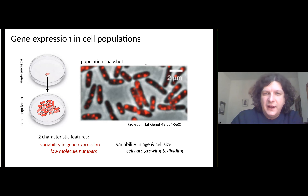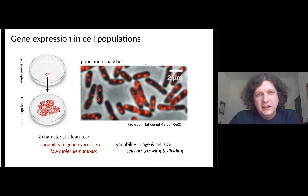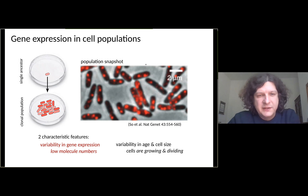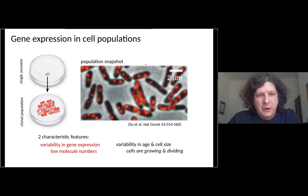In quantitative analysis, an image of those cells is taken using single molecule FISH, shown here on the right in E. coli. What you see are bright red spots of red fluorescence - individual molecules in those cells. In these type of snapshots there are two characteristic features: variability in the number of spots, amounting to variability in gene expression due to low molecule numbers.